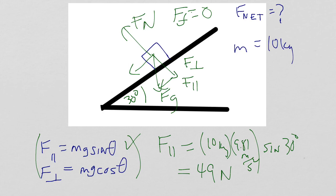So 49 newtons, not only is it F parallel, but in this case, F parallel is equal to F net. Okay, keep working hard. Check out more videos. And good luck.